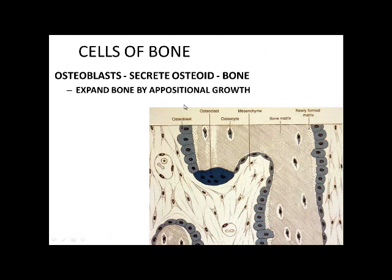If we look at the specific cells of bone: osteoblasts are the cells that differentiate to make bone. Once an osteoblast lays down bone, it gets trapped in its matrix — it paints itself into a corner, so to speak — and becomes an osteocyte. There are also bone cells that eat bone for the remodeling process; those are osteoclasts.